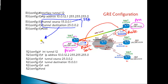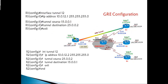One critical thing to keep in mind: you must have reachability between the tunnel source and destination. If there is no reachability between them, the tunnel will not come up — that is mandatory. Ensure reachability between the source and destination before configuring the tunnel. Once tunnel source and destination are configured, it builds a logical point-to-point connection between Router 1 and Router 2, and then you can assign your own IP addresses.